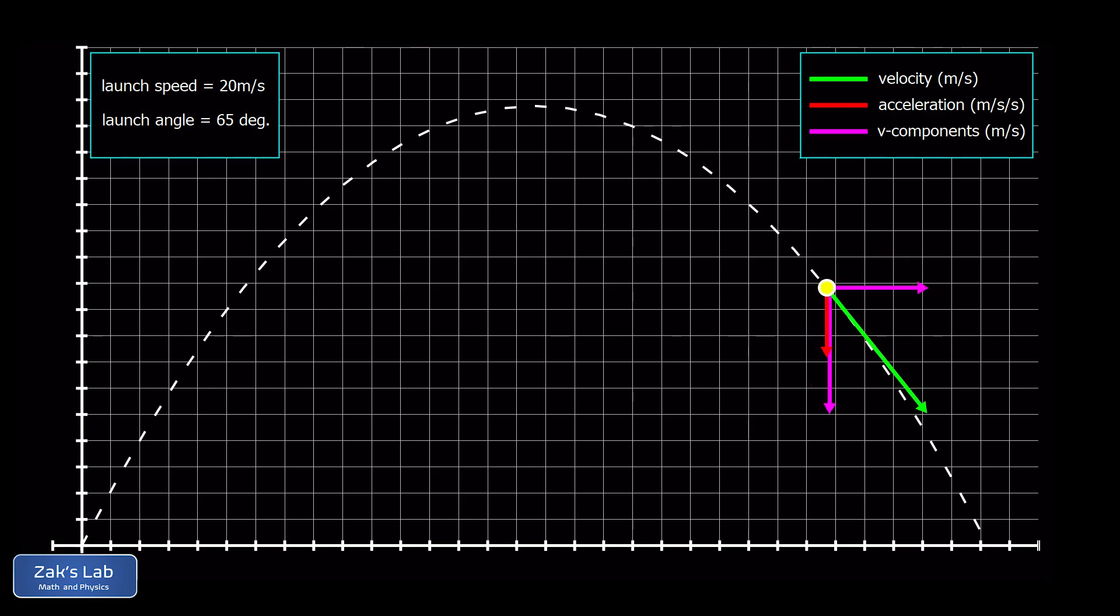In other words, the speed is increasing on the way down. Eventually this thing is going to land, and we call the final velocity vector the impact velocity for the projectile.